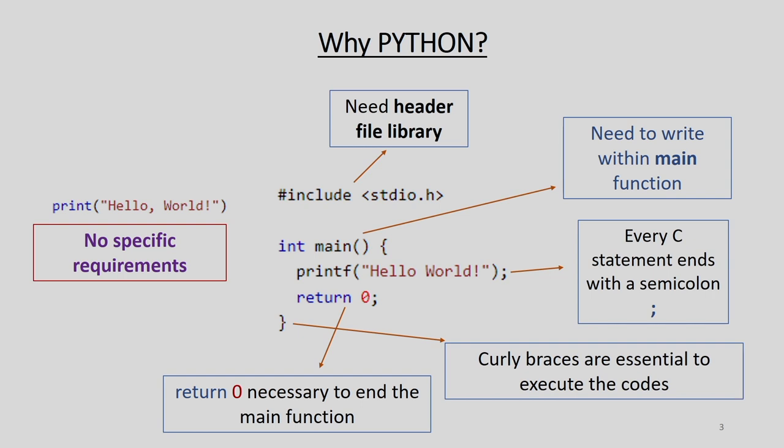Why Python? Here in the middle of this slide, I have written a code in C to print the statement 'hello world.' In order to print this statement, I am writing three lines of code. The first line is to initialize the header library, then I am using the main function, and then I am writing the statement within curly braces. Since this is a function, I have to return 0. Just to print this single statement, I am writing four lines of code. So this is becoming a cumbersome affair.